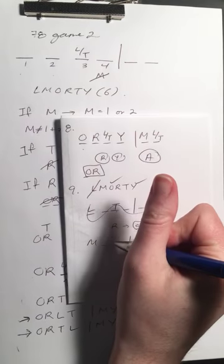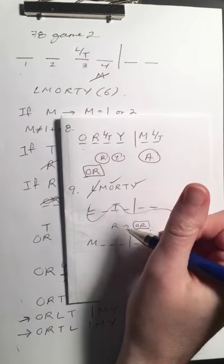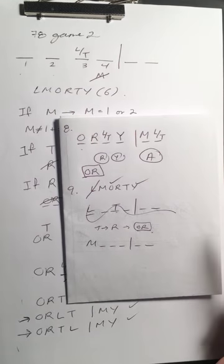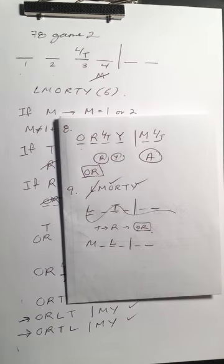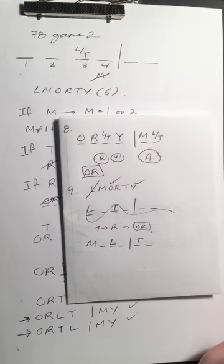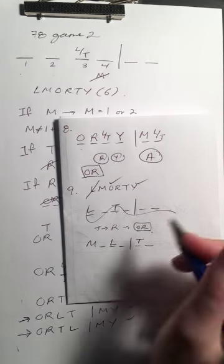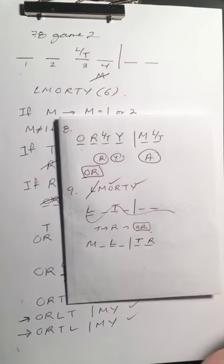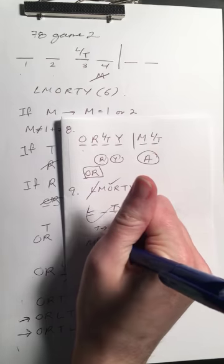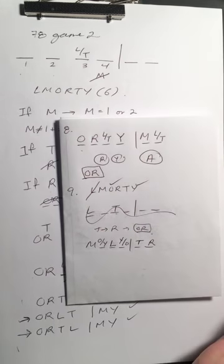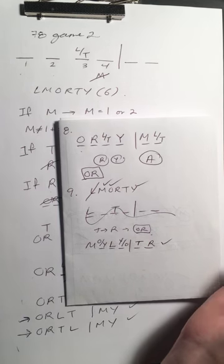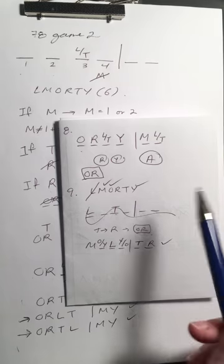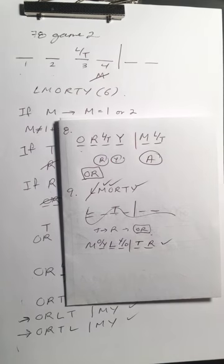Now we try M in the first spot. If we put T third we run into the exact same problem — T being in means R has to be in, and O has to be right before R with no room. So instead we put L third, T is out, and we don't have room for O and R together, so R can't be in. But O and Y are fine. M can totally be first, so that works — M is added to our bank of acceptable solutions.